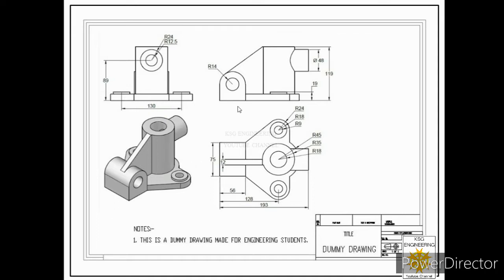On a drawing we draw different views of an object in order to communicate the shape and size of each part of the object, or we can say, in order to communicate the complete geometry of the object to the concerned persons involved in the manufacturing.